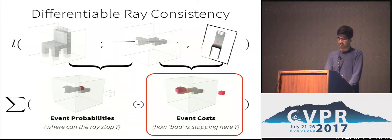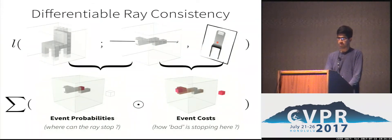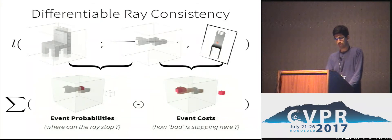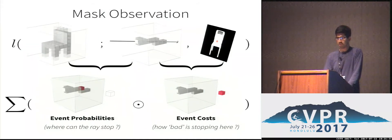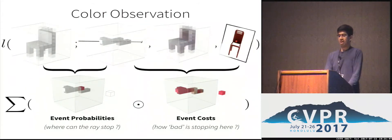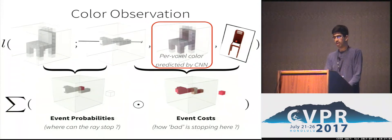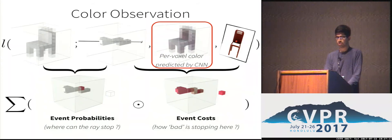We formulated these event costs and probabilities in terms of which the ray consistency loss was defined. Note that the ray consistency loss is differentiable with respect to the shape prediction X, because the event probabilities are a nice function of shape X. The figure considers a depth observation, but as promised, we want to handle different kinds of observations. It is straightforward to do that by just defining the corresponding event cost function. We can handle foreground mask supervision by defining a corresponding event cost function, while event probabilities stay exactly the same. We can do the same for color observations — if our CNN predicts one extra thing, a per-voxel color, then we can define an event cost function that penalizes the difference between the observed color and the color predicted at that stopping point. The same formulation with event costs and event probabilities can be used.